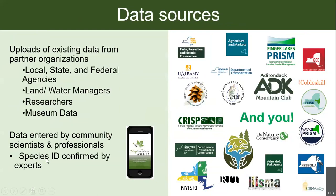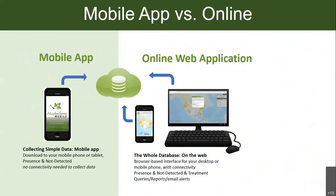One thing to note is that species IDs are confirmed by experts. I also want to make the distinction between the IMAP mobile app and the online web application. The whole database exists on the web — that's where you can view and work with the data, accessible through your internet browser on your phone, computer, or any device with internet.